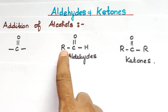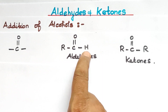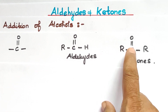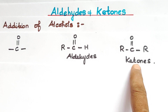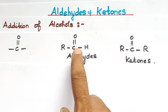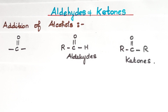If you look at aldehydes, the structure is R-C=O-H, and ketones are R-C=O-R. So aldehydes and ketones both contain the carbonyl C=O group. The nature of the carbonyl group leads to nucleophilic addition, as discussed in the previous videos.